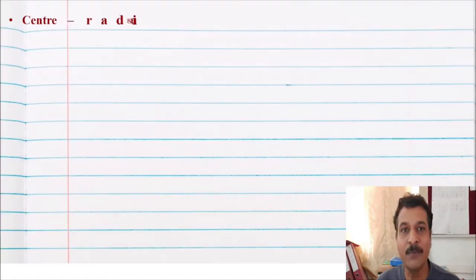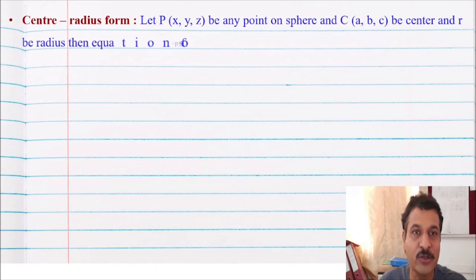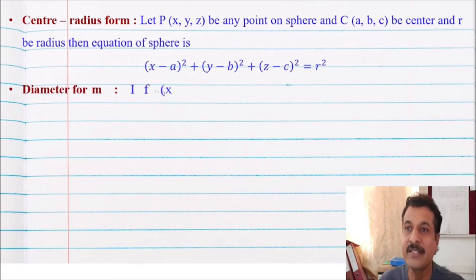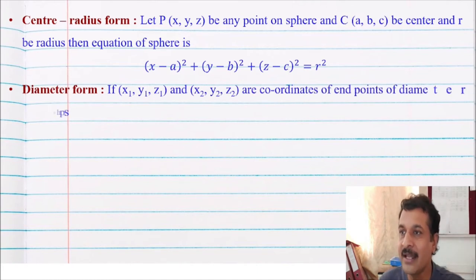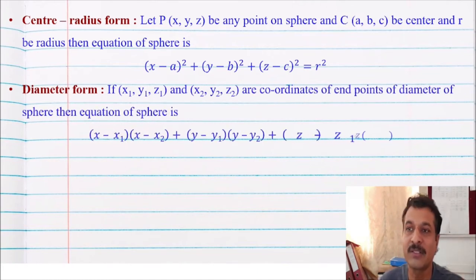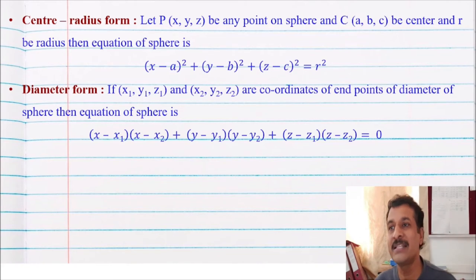Also, if we have the centre and radius of a sphere, then how to find the equation of the sphere: if (a, b, c) is the centre and r is the radius, then the equation of the sphere is (x minus a) squared plus (y minus b) squared plus (z minus c) squared equal to r squared. This is known as the centre-radius form of the sphere.